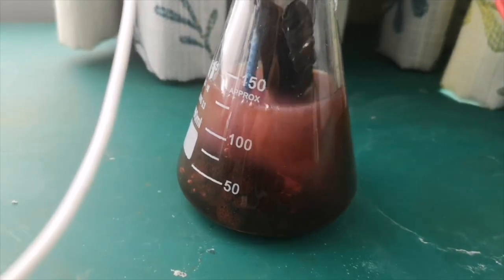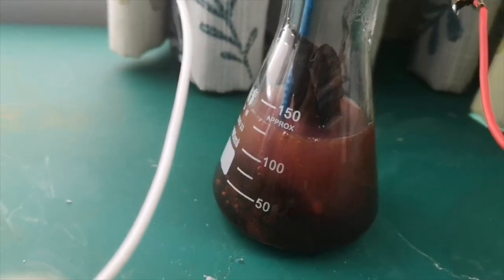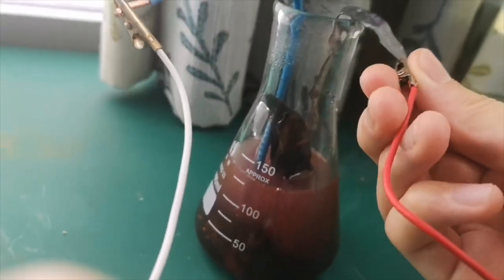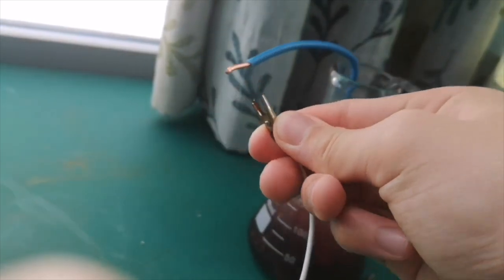The anode showed no apparent corrosion, so, I mean, I had no idea where the purple color comes from. If any of you guys had any ideas, I'd love to hear them in the comments. I disconnect the power supply and let the solution stand.